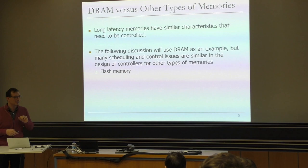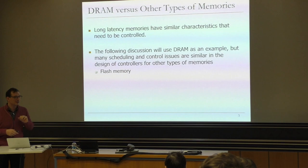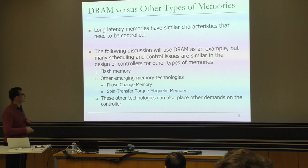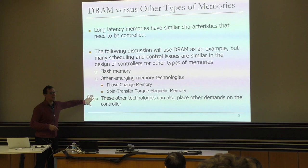For example, flash memory. We will talk about flash memory later in the lectures. Other emerging memory technologies like phase change memory and STT-MRAM — we will definitely have a lecture on emerging memory technologies after the exam week. These also require similar scheduling mechanisms, and in addition to DRAM, these memories are actually more complex because they place other demands on the controller. Errors are a big problem in all of these memory technologies, even bigger than DRAM.